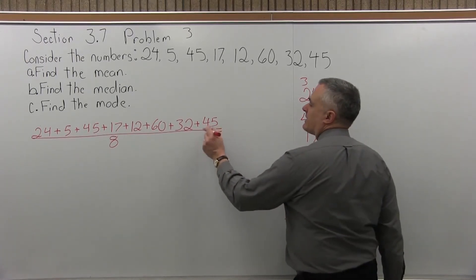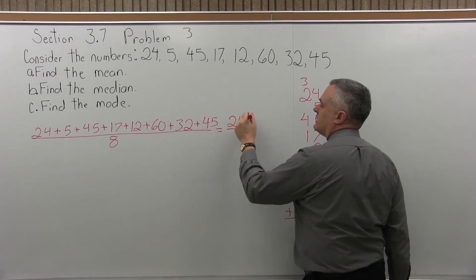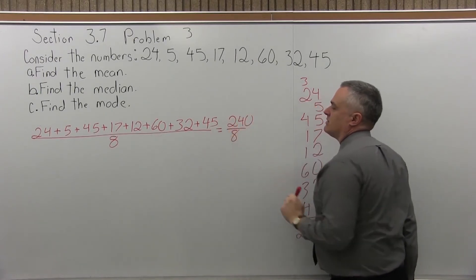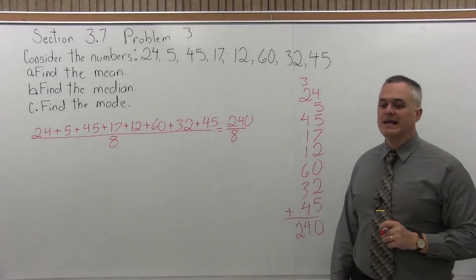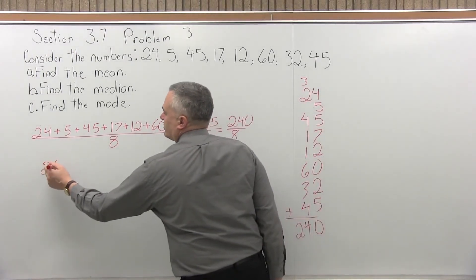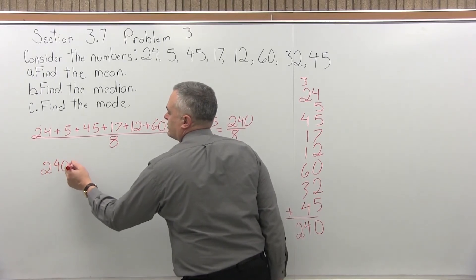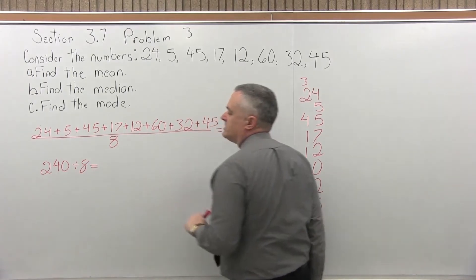So again, going back to this notation, which I think makes it clear as to what you want to do, you'd have 240 divided by 8. Now, again, with a calculator, the way you would do that is do the top of the fraction, 240 divided by the bottom or denominator equals, and you'll get your answer.